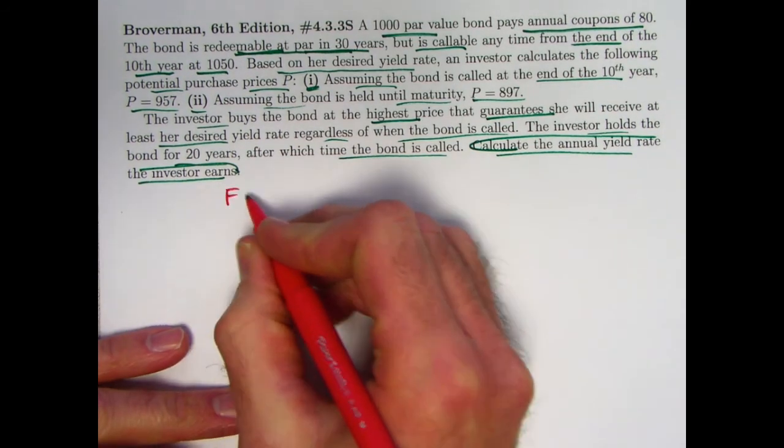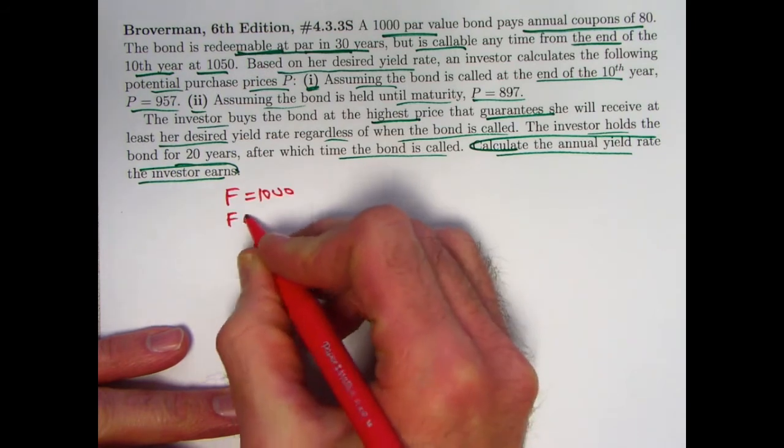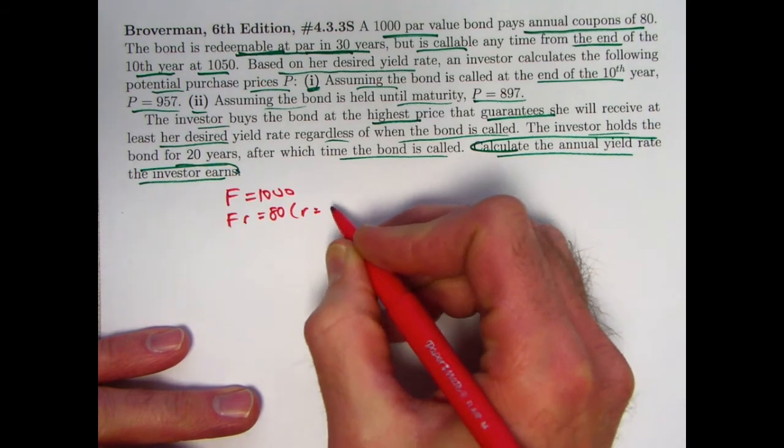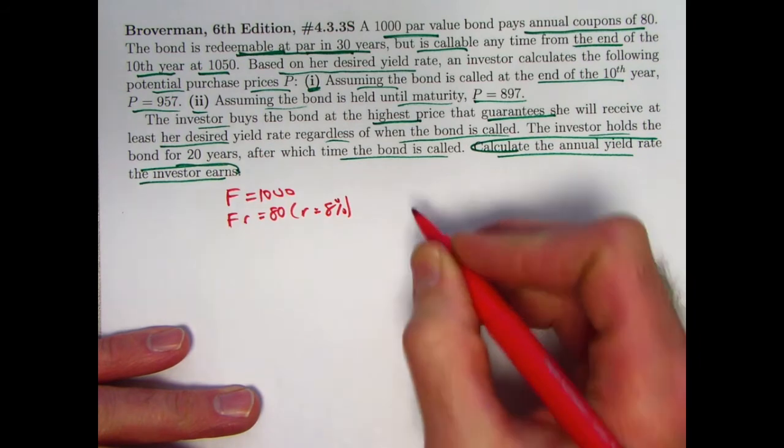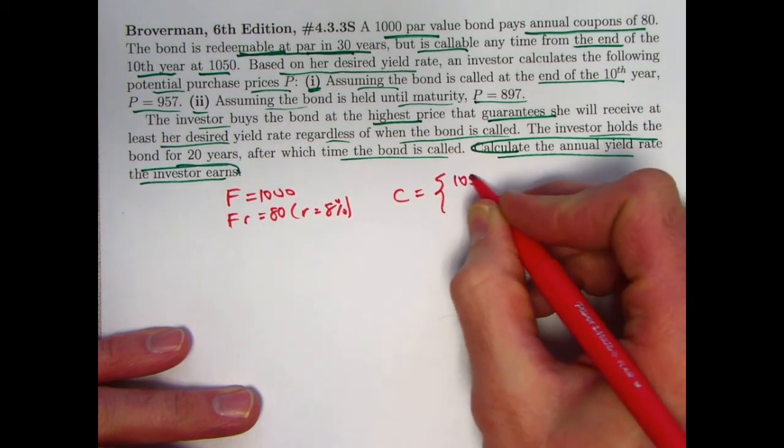All right, let's start by writing down what we know. F is 1,000. F times R is 80, so evidently R as an annual effective annual yield rate would be 8%. These are annual coupons. C, the redemption amount has two possible values.